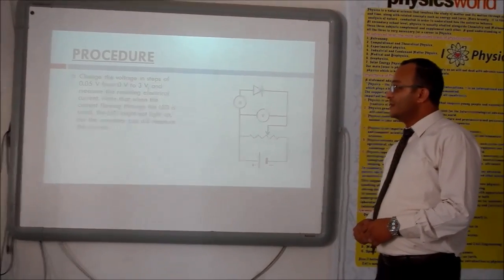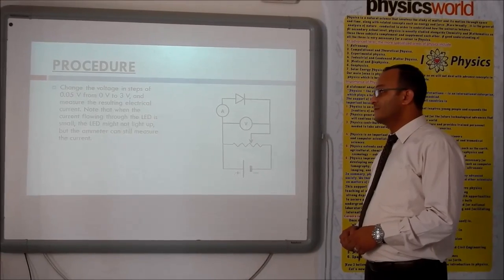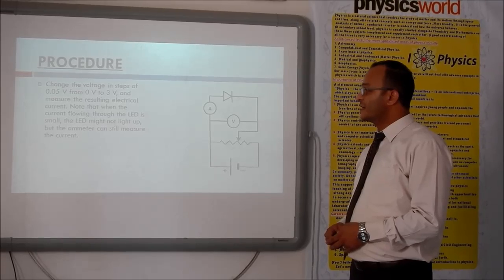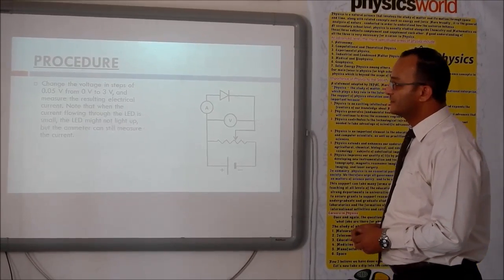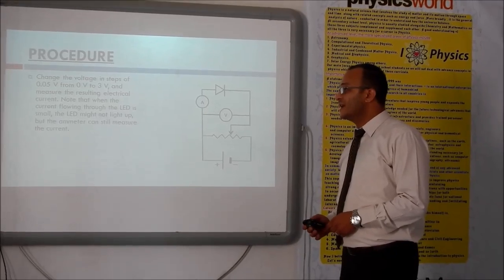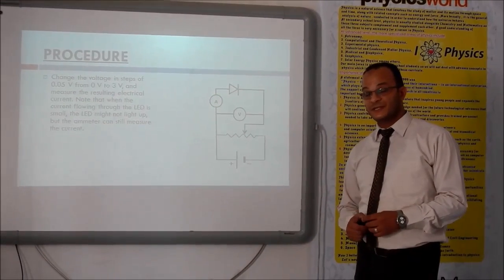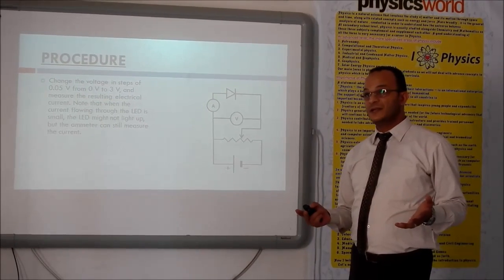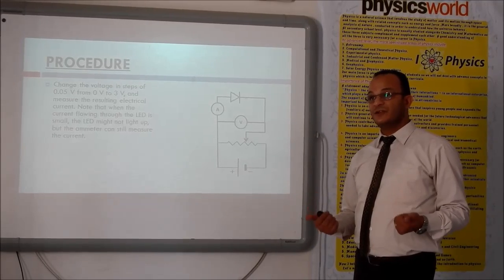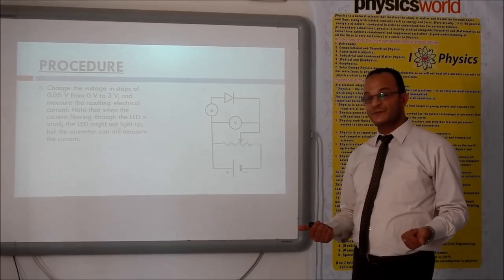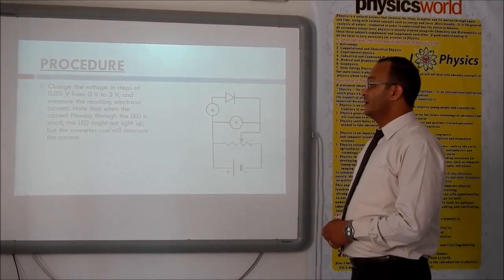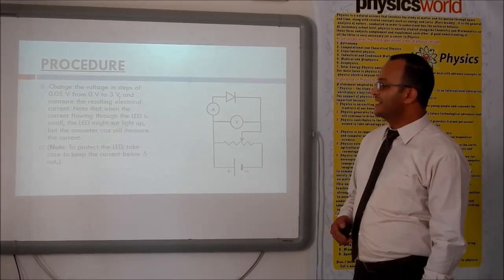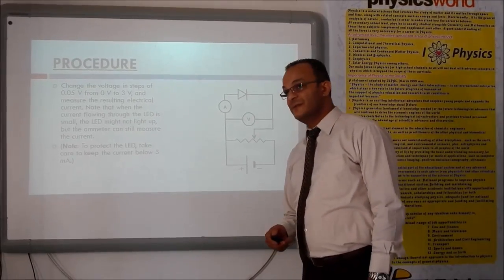Change the voltage in steps of 0.05 volt from 0 volt to 3 volts and measure the resulting electrical current. First, note that when the current flowing through the LED is small, the LED might not light up. And this is a very important piece of information. If the LED is not lighting up, this is not the wrong connection. It means that the voltage applied is not sufficient to make the LED light up. But the ammeter can still measure the current. Note, to protect the LED, take care to keep the current below 5 milliamperes.